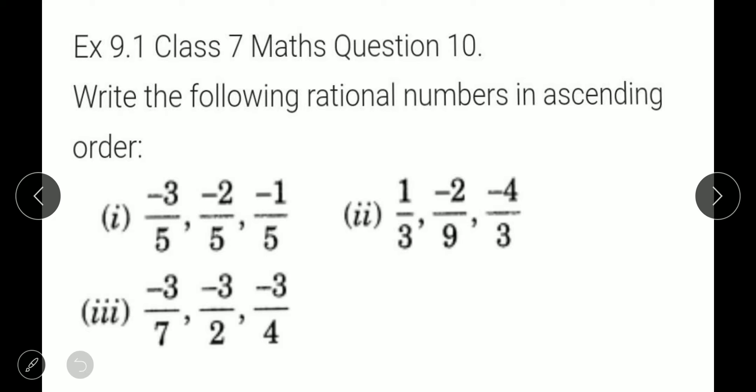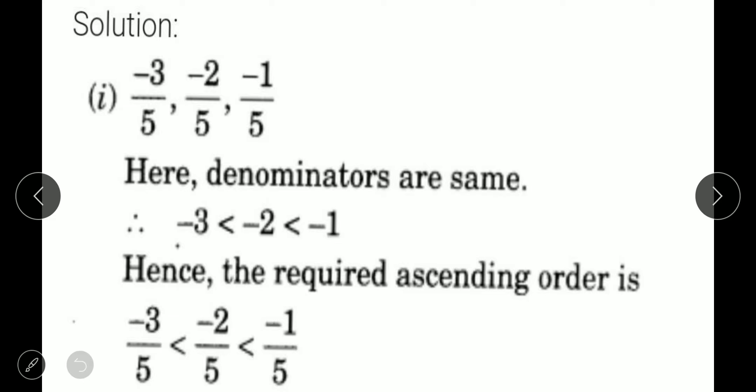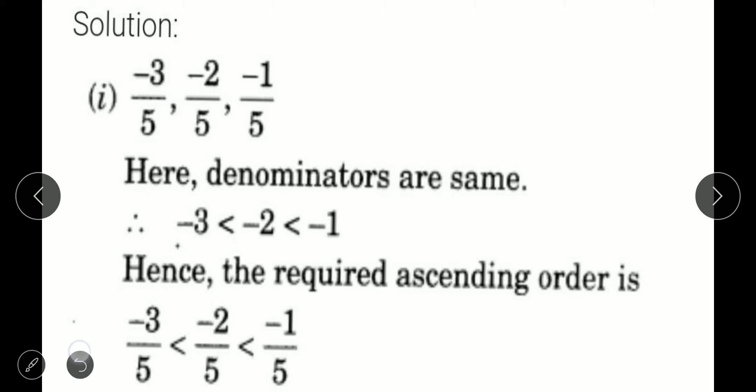First step: make the denominator equal. Now come to the first part. The first part question has three numbers: minus 3 upon 5, minus 2 upon 5, and minus 1 upon 5. All the denominators are equal.